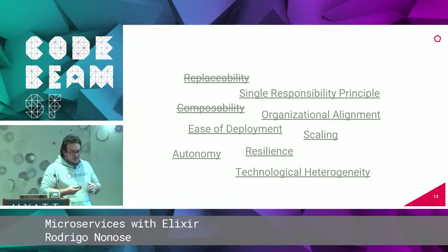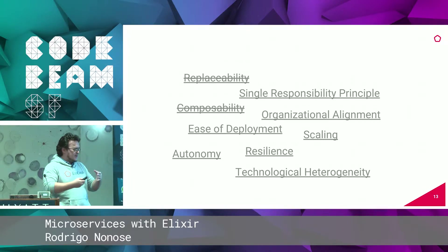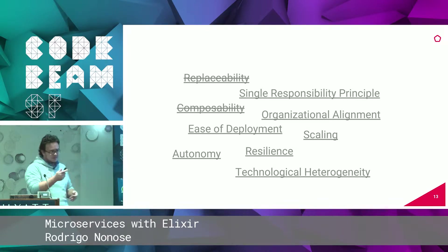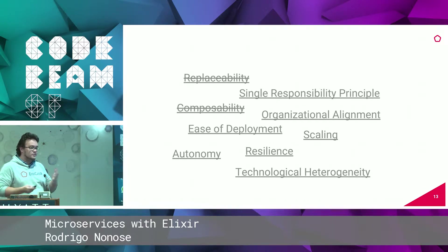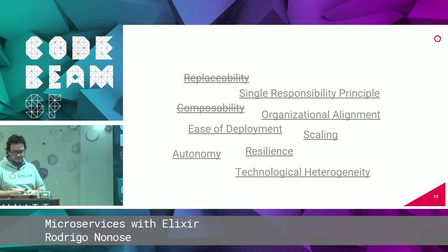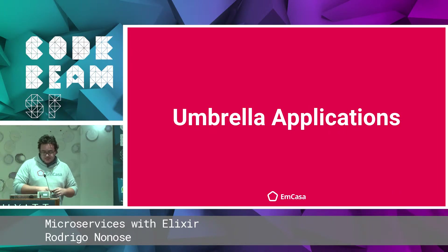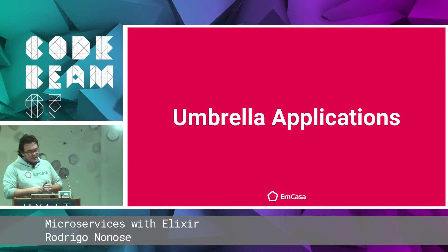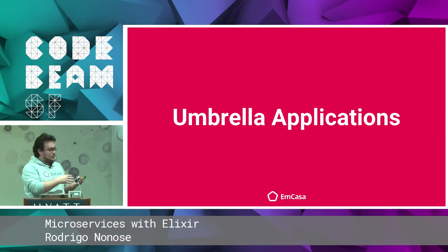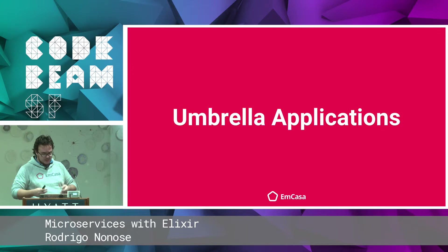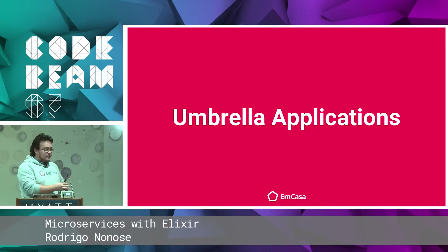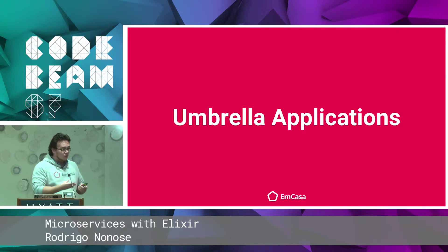Since we don't have too much time, I'm going to assume that functional programming itself addresses replaceability and composability. If you're experienced with functional programming compared to most mainstream languages, it's a lot easier to do that kind of stuff. One key feature in Elixir is umbrella applications. Basically, Elixir is a bunch of modules and functions on those modules — when the VM spins up, those pieces of code may or may not become a process.